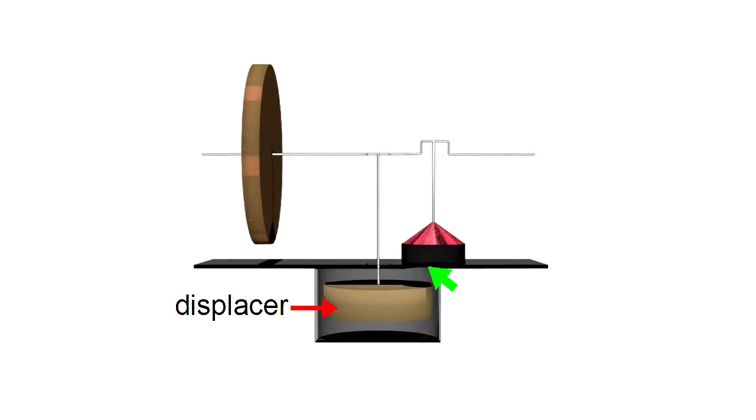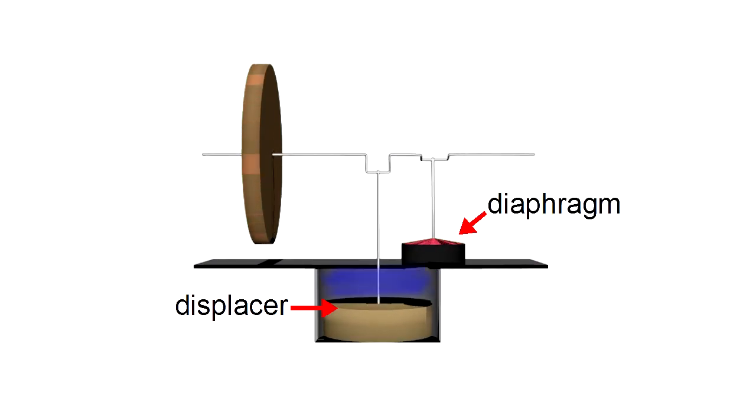There's also a hole here between these two cylinders. When the air is heated, it expands and pushes out on this diaphragm. And likewise, when the air is cooled, it's compressed and the diaphragm is pulled inward.